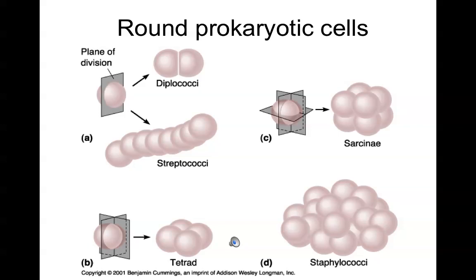If there are two in pairs, then we would use the prefix diplo. If we find them in chains, like pearls or beads on a string, then we use the prefix strepto, which is derived from a Greek and Latin term that means 'chain of.' If they're in pairs that package together in groups of four, we would use the word tetrad.